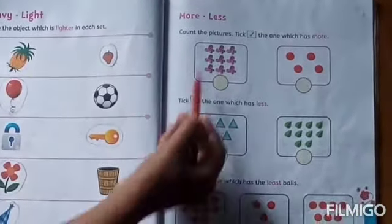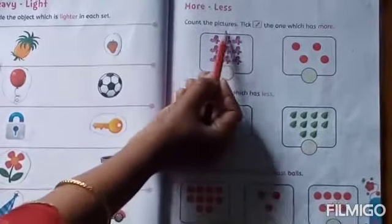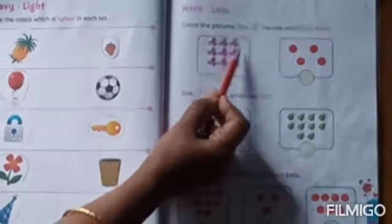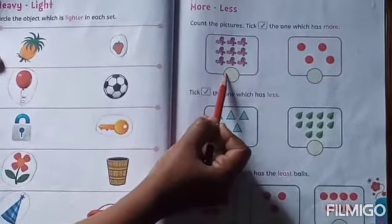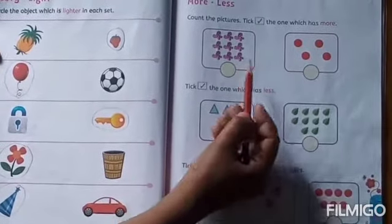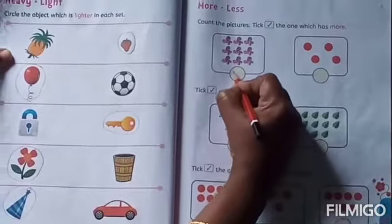Look at these pictures. Count the pictures. Tick the one which has more. The first picture is more. This picture, less. Then tick first one. Ok?